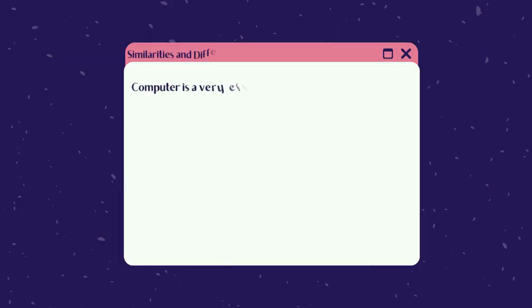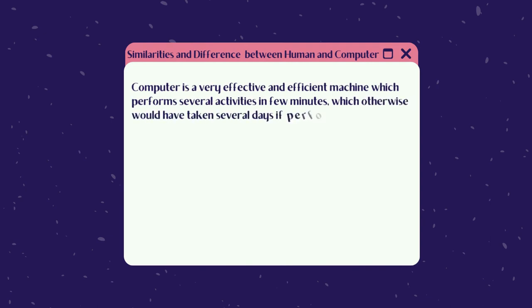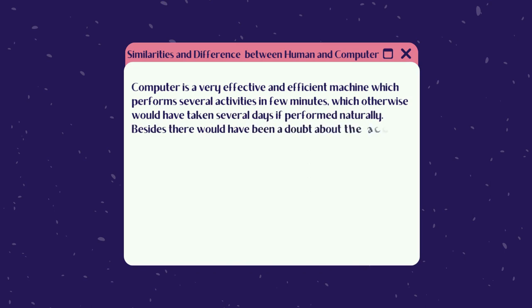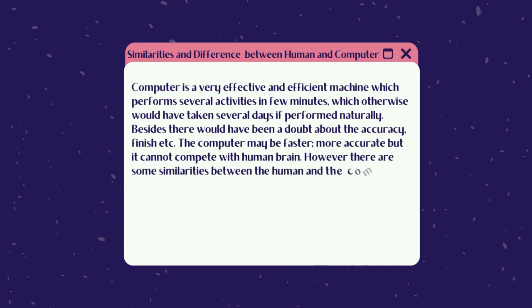Similarities and differences between human and computer. The computer is a very effective and efficient machine that performs several activities in a few minutes which otherwise would have taken several days if performed naturally. Besides, there would have been doubt about the accuracy, finish, etc. The computer may be faster and more accurate, but it cannot compete with the human brain. However, there are some similarities between the human and the computer which make the computer more understandable.